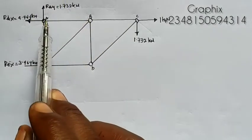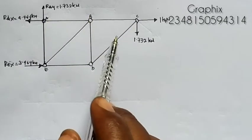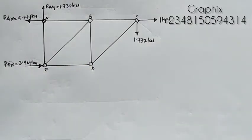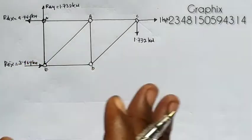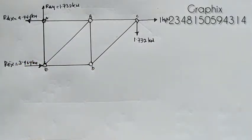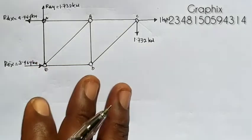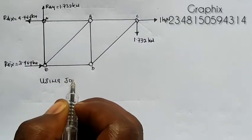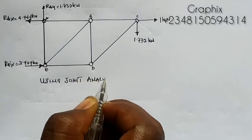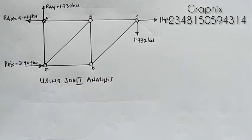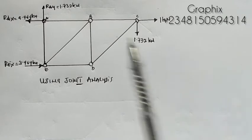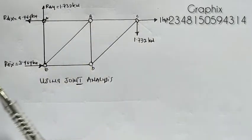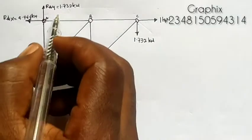Now we need to find the forces in each member. There are three methods: joint analysis, section analysis, and graphical analysis. In this lecture we are using joint analysis. We have five joints: A, B, C, D, and E. We start with a joint that has no more than two unknowns.